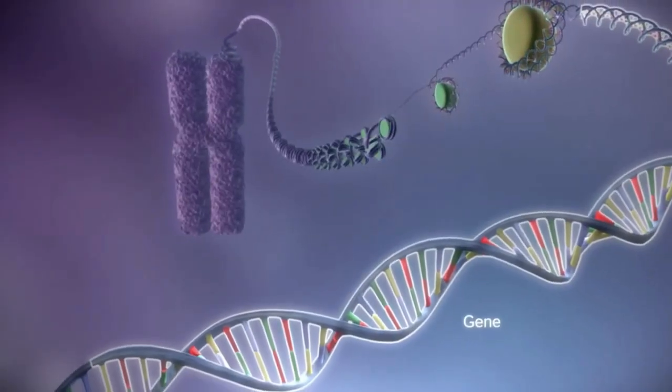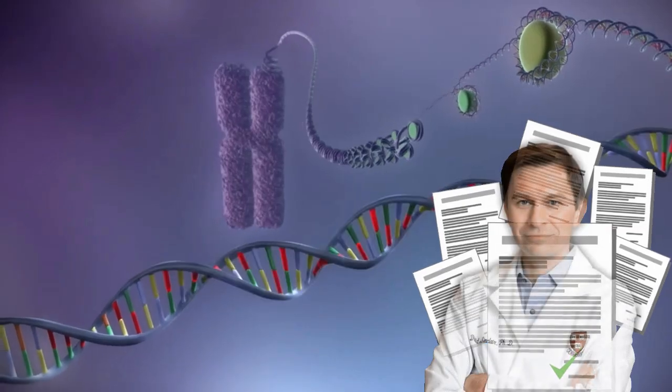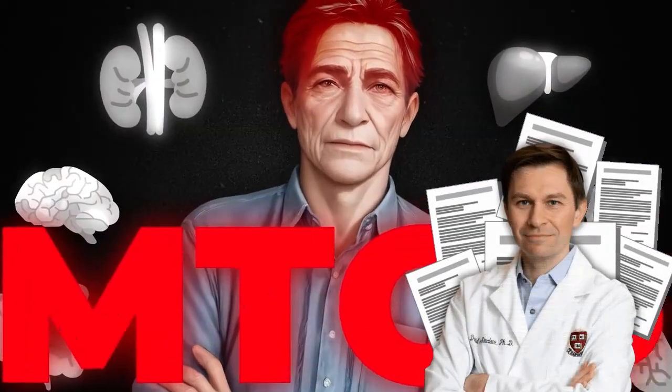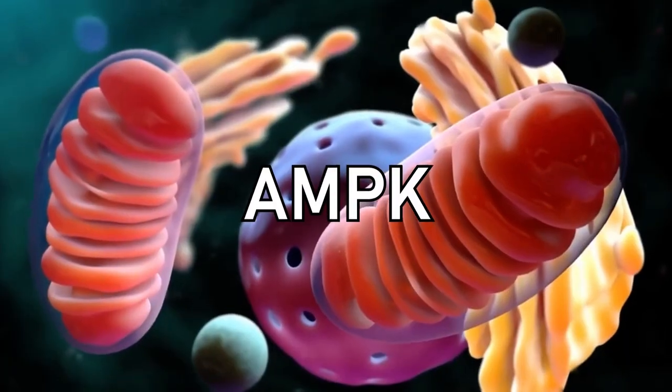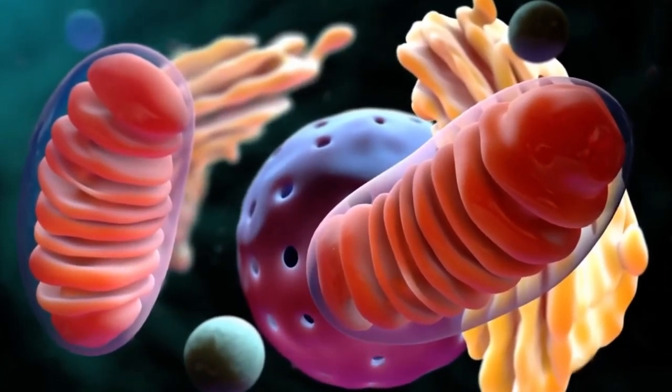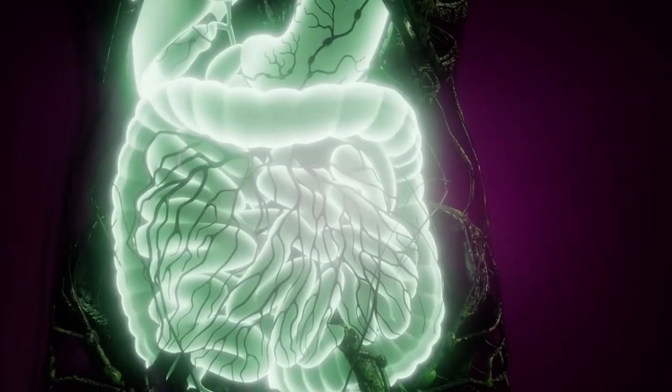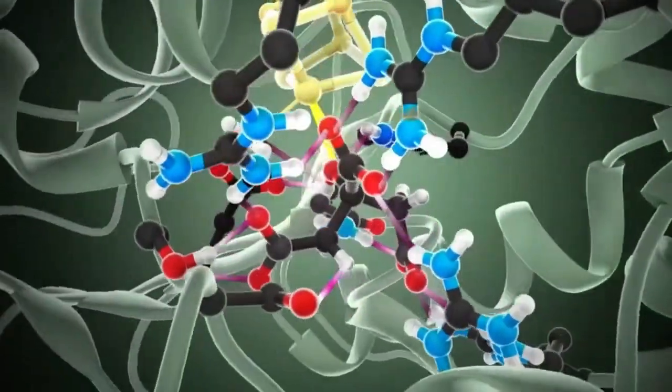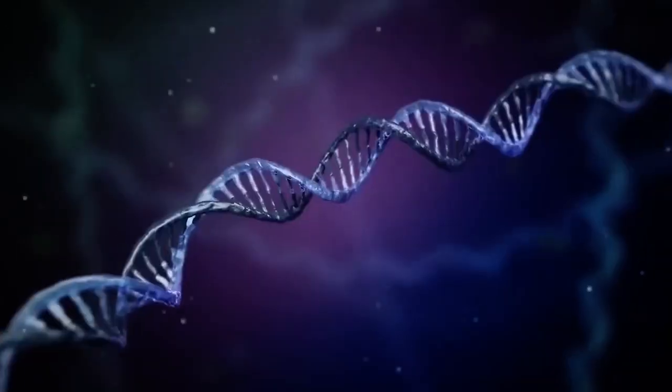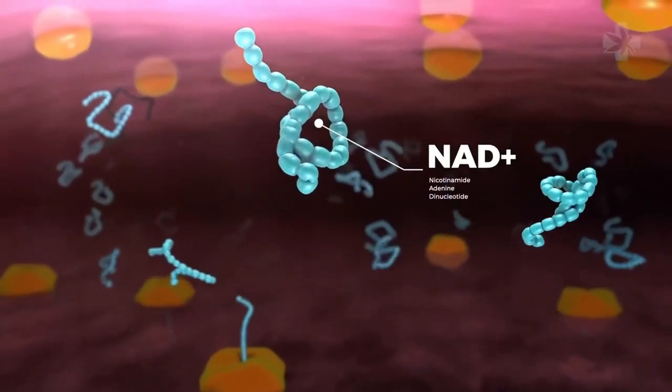You're activating ancient survival circuits. And these circuits involve key longevity genes or pathways that the sources mention repeatedly. Three big ones are MTOR, which senses nutrients, especially protein, amino acids. Then there's AMPK, which senses low energy levels, like when you're fasting or exercising. And then the sirtuins. These are a family of enzymes, kind of like guardians of the epigenome, involved in DNA repair and stress response. They need a molecule called NAD to work, which tends to decline with age.